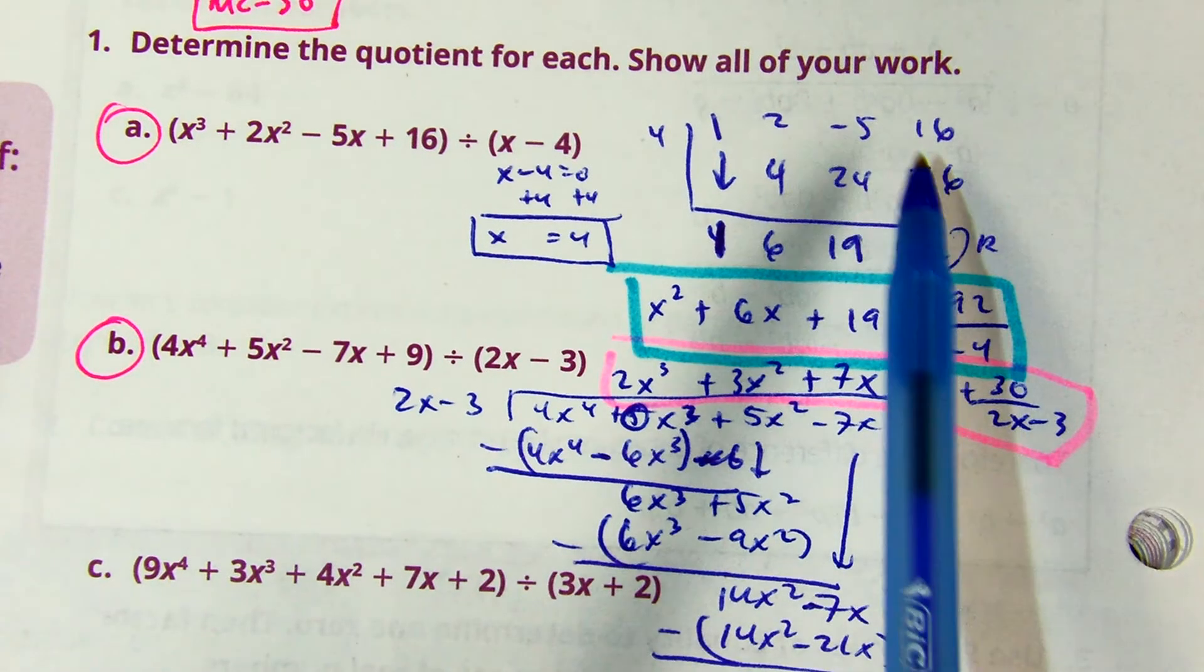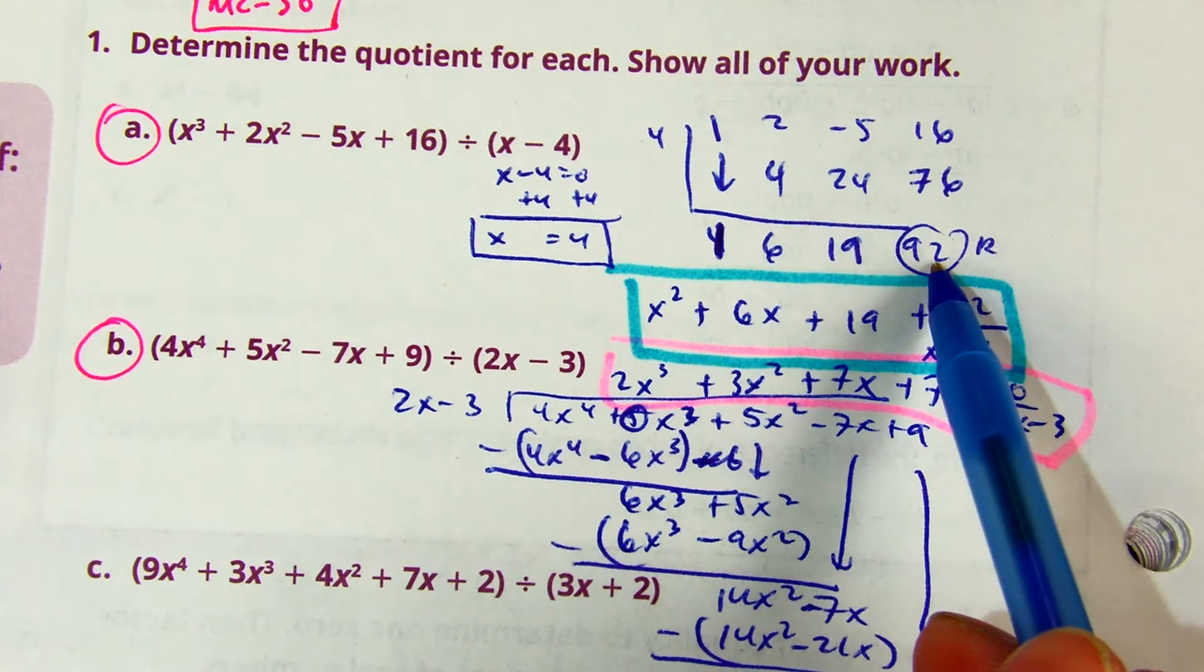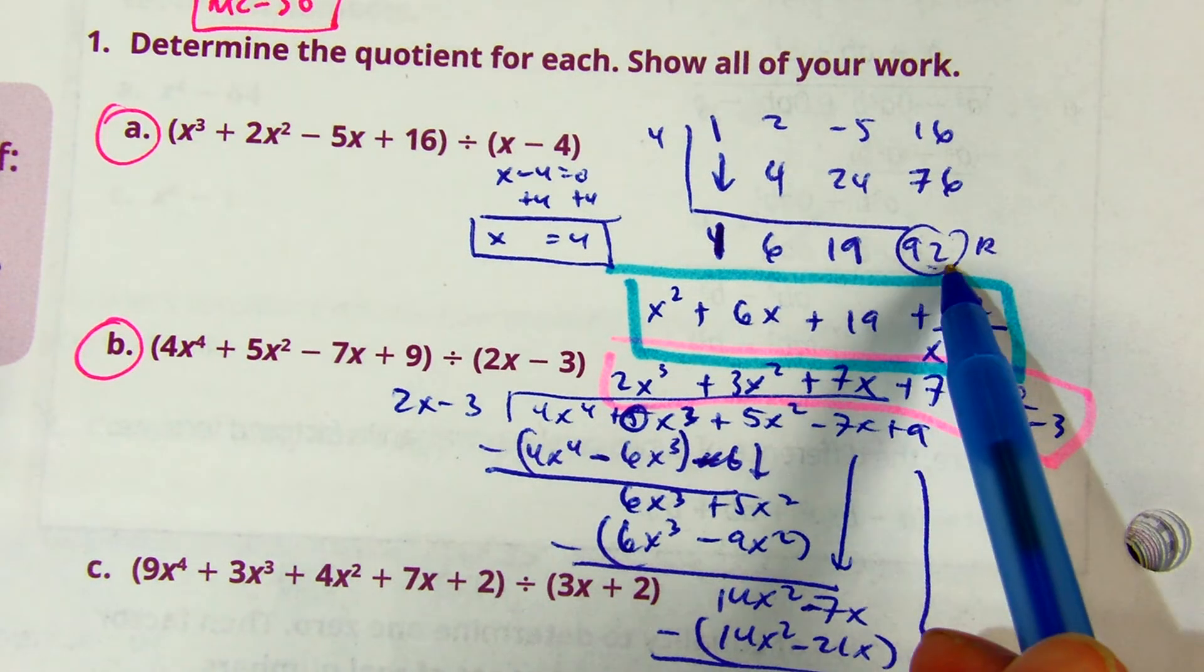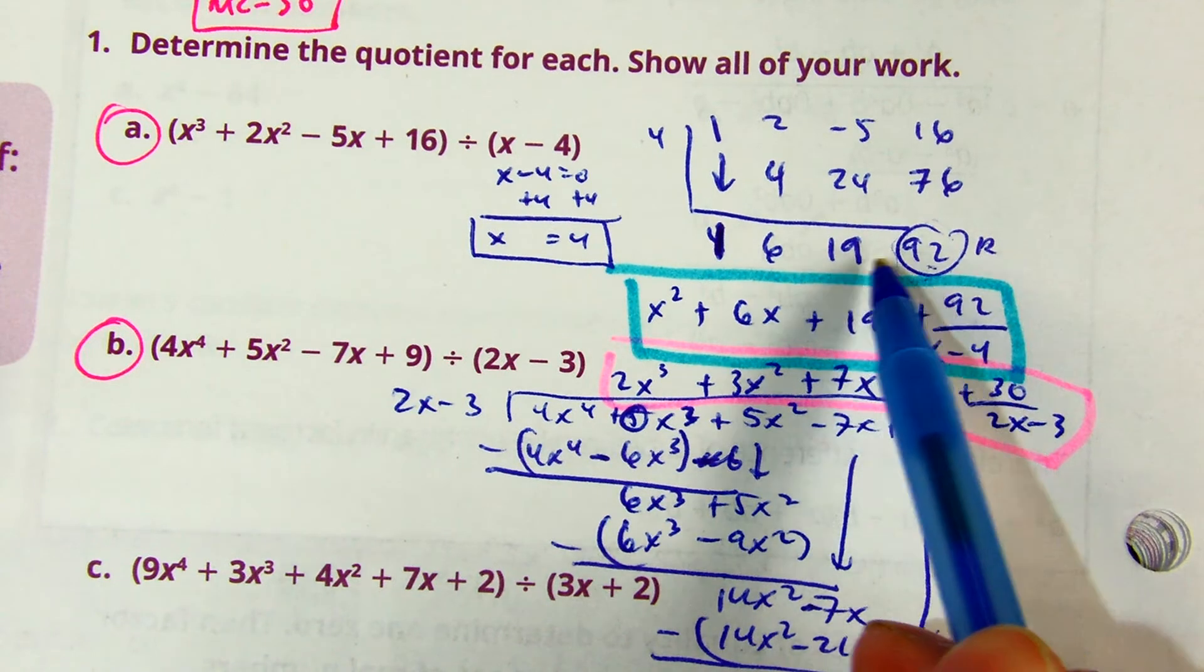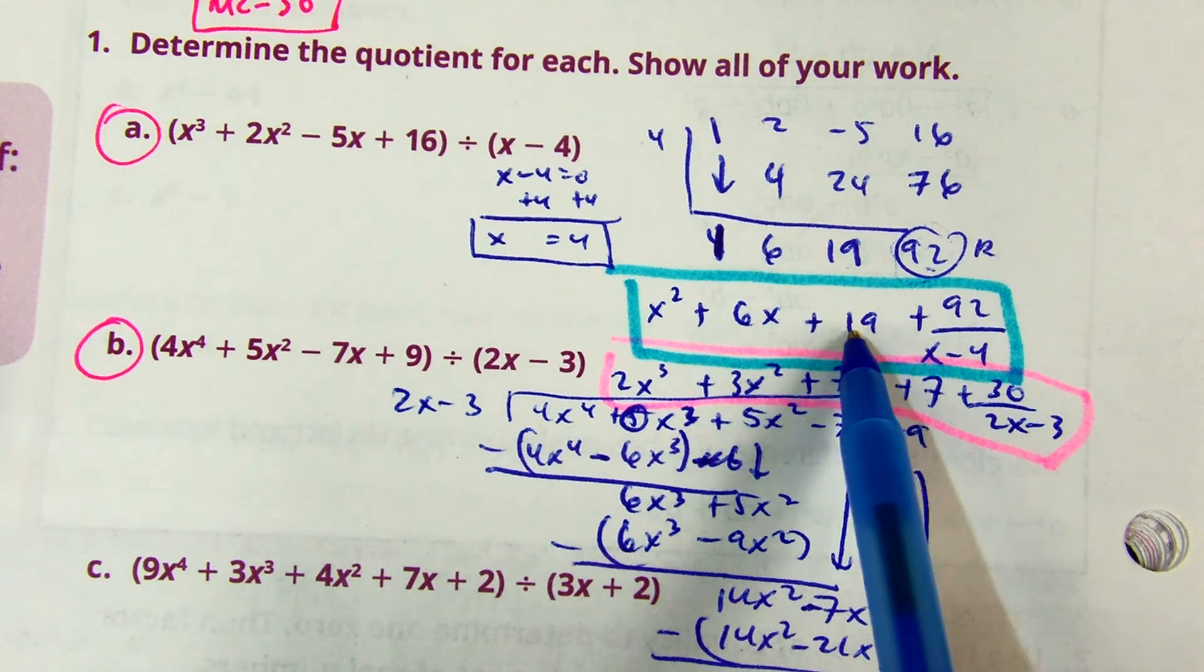A common mistake I've been seeing students do this year is that this number is the remainder. This is the one that goes into the top part of the fraction. If this is the remainder, this is your constant. And then you just keep adding an x as you go over.